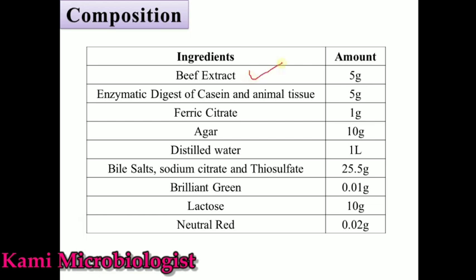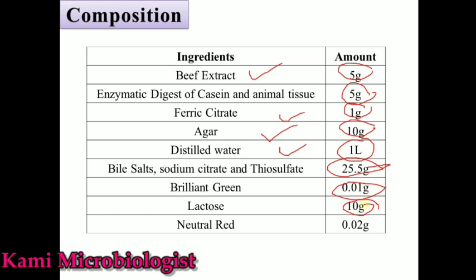The ingredients in this media include: beef extract 5g per liter, enzymatic digest of casein and animal tissue 5g per liter, ferric citrate 1g per liter, agar 15g per liter, distilled water 1 liter, bile salt sodium citrate and thiosulfate 25.5g, brilliant green 0.01g, lactose 10g, and neutral red 0.02g.